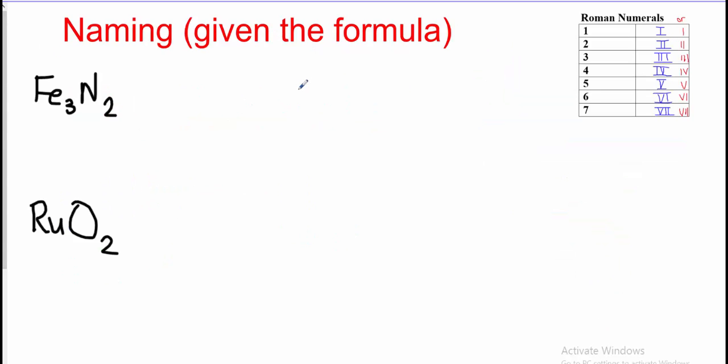We're going to start with naming — given the formula, we write the name. Before, with a simple ionic compound, you just looked up the metal, wrote the name, looked up the nonmetal, wrote the name, and changed the ending. Now we have to include the Roman numeral showing the charge on the metal, so we have to think about what charge we have on the metal. To do that, we use our swap-and-drop, or criss-cross method, working backwards. I'm also going to work through the mental math approach to naming — you might find it easier to think about how many of each ion you need, using common sense and balancing the ion charges.